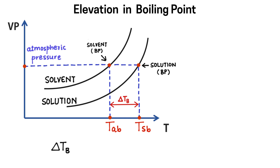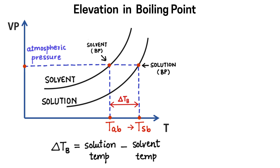The elevation in boiling point is the solution temperature minus the solvent temperature. If I subtract the solvent's temperature from the solution's temperature, I get delta TB. So, delta TB is equal to TSB minus TAB. This is the formula for elevation in boiling point — from this we can calculate the elevation in boiling point.